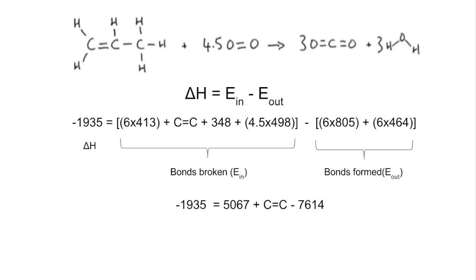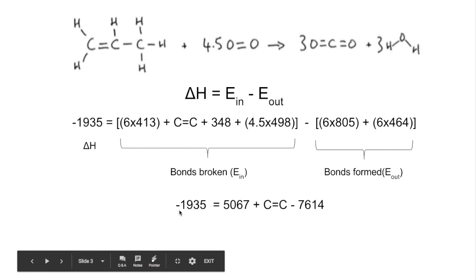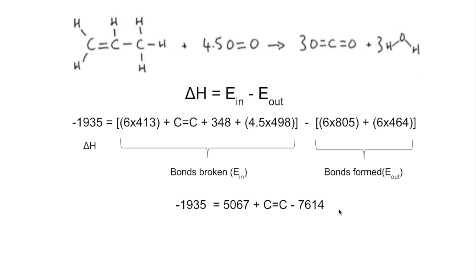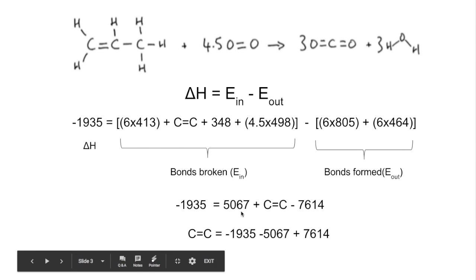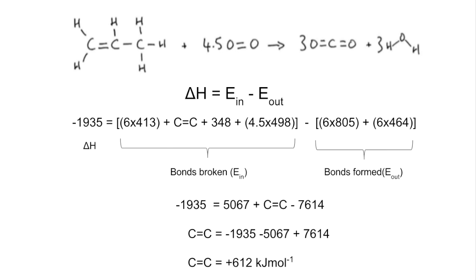I've just calculated what I can. I'm getting the enthalpy change is equal to 5067 plus the unknown minus this number here. The next thing I need to do is get the C=C double bond on its own. So C=C double bond on its own is the minus 1935. I'm essentially taking this over to this side so the sign changes, this over to this side and its sign changes as well. And you can see that's given me an answer of plus 612 kilojoules per mole.